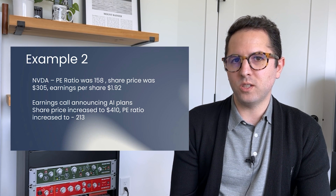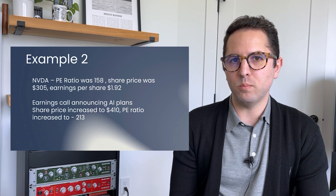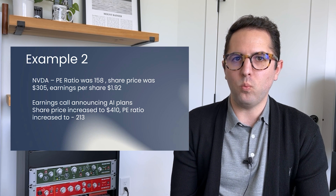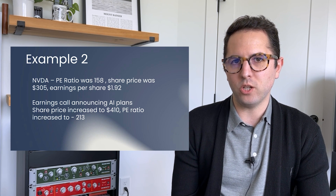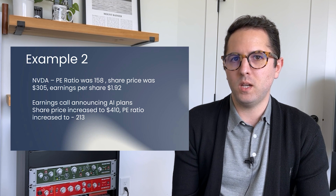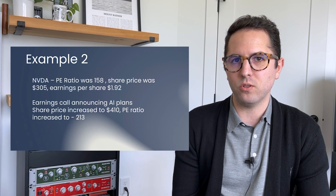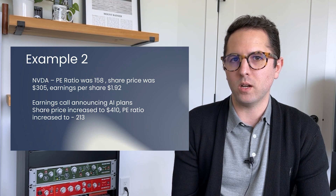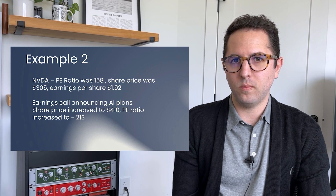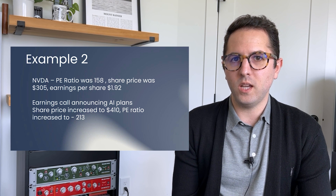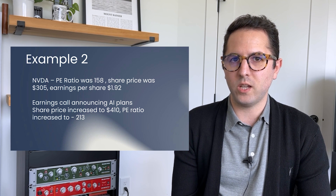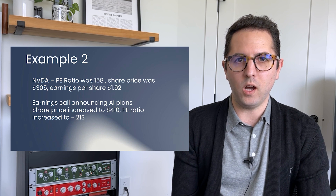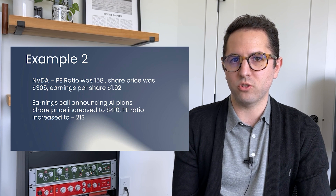I also want to talk about NVIDIA. NVIDIA is a great example of the AI trend. Before announcing their plans to integrate AI into their business model, NVIDIA had a 158 P.E. ratio, meaning it would take 158 years for them to earn their market cap from earnings. After that announcement, NVIDIA's share price went up 30% and their P.E. ratio went up to 213.